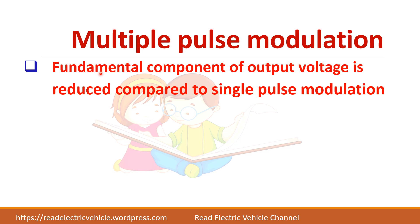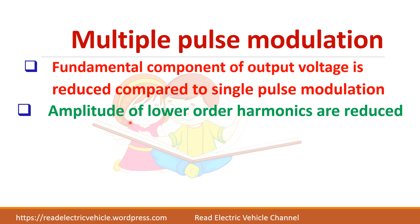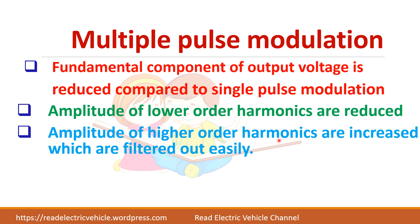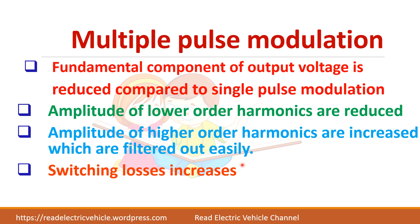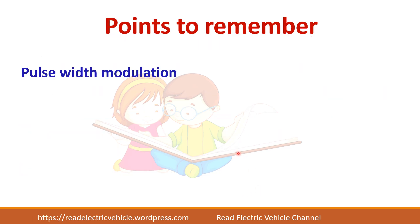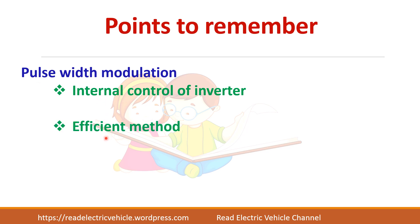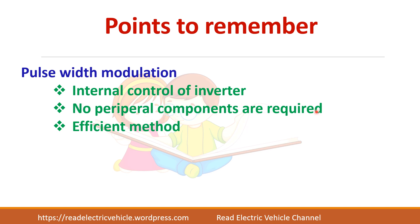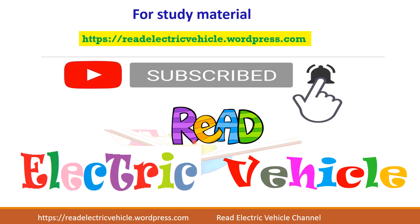The fundamental component of output voltage is reduced compared to single pulse modulation, but lower order harmonics are further reduced and higher order harmonics increase — which can be easily filtered. However, increasing the number of pulses also increases switching losses. Key points: PWM is an internal control method for inverters, it is efficient, no peripheral components are required, and harmonic content is reduced. Thank you — if you like the video, please subscribe.